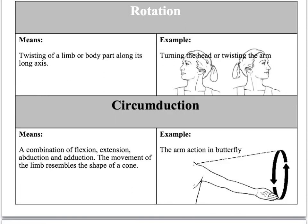Rotation is the twisting of a limb or body part along its axis, like turning the head or twisting the arm. And circumduction is a combination of flexion, extension, abduction, and adduction, where the end of the hand makes a circle and is held at a point creating a cone shape.